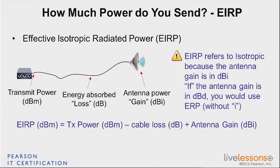Notice that some documents talk about ERP without the 'I'. That is simply the same idea, but instead of expressing the antenna reference in I — isotropic — it's expressed in D — dipole. So we remove the I and say ERP. When you hear people say ERP or EIRP, make sure you hear them correctly, because there is a 2.14 dBi difference between them. That may be the difference between being just at the limit or above it.